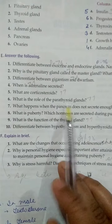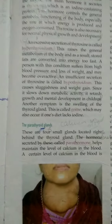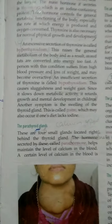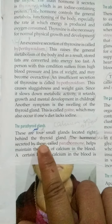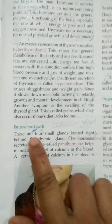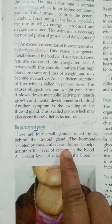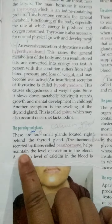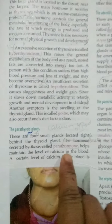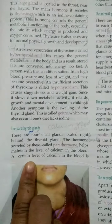Question number six: what is the role of the parathyroid gland? Come to page number 77. The hormone secreted by the parathyroid gland is parathormone, which helps to maintain the level of calcium in the blood. A certain level of calcium in the blood is required to facilitate muscular activity, among other things.